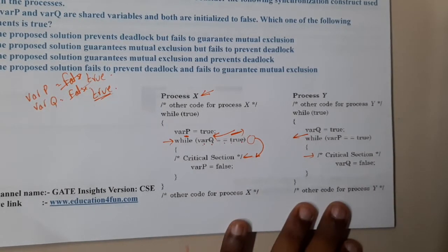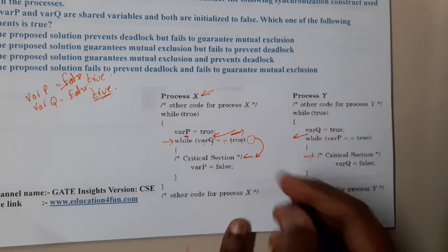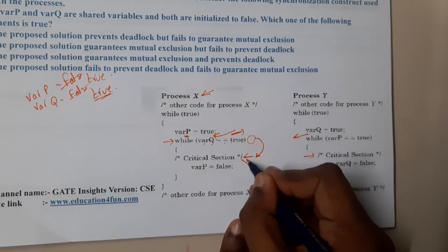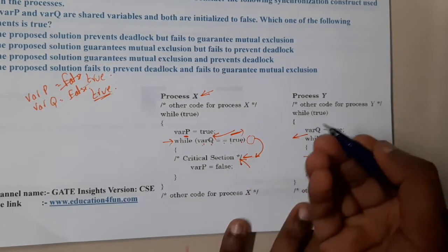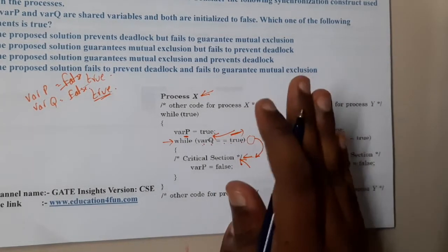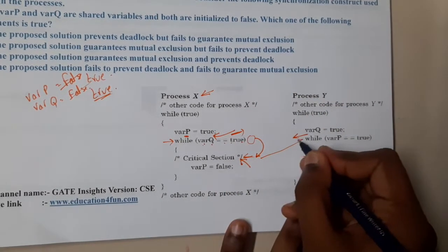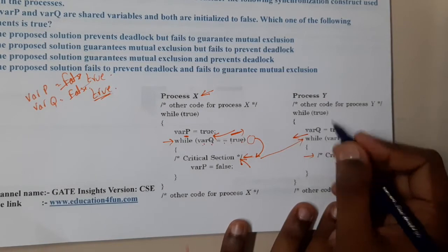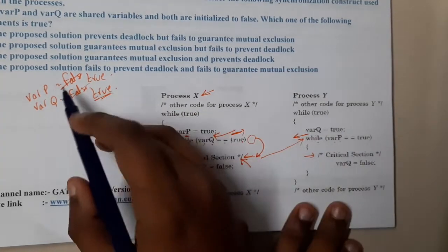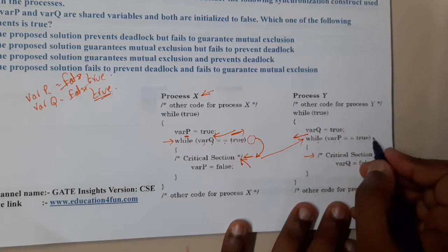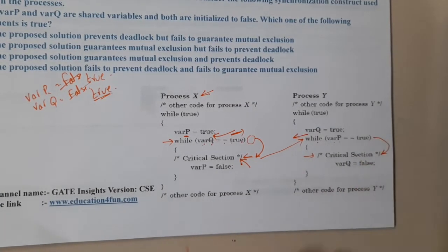Now I am inside critical section. Now what I will do is I will stop right here and give again chance to Y. What will Y do? While varP equal to true - yes, true equal to true - this is also inside critical section now.